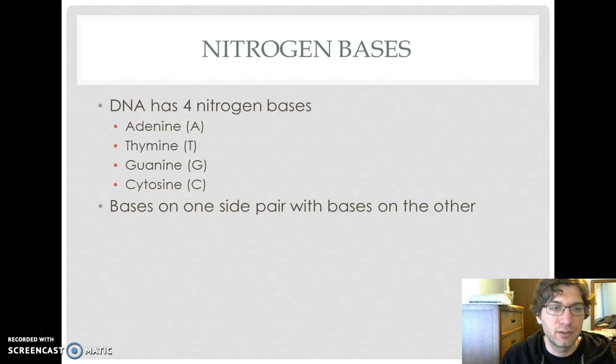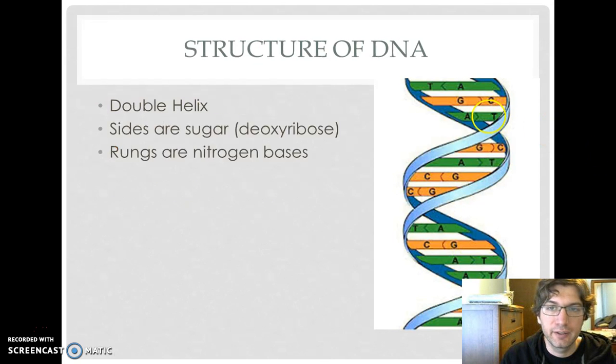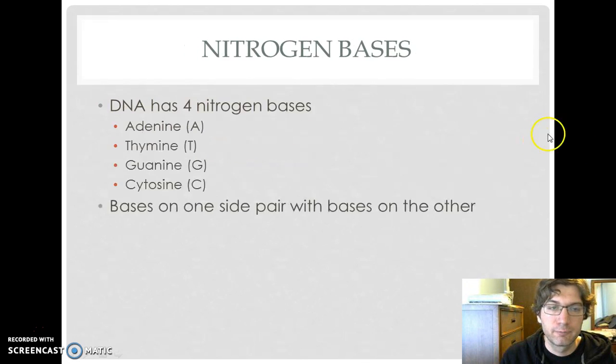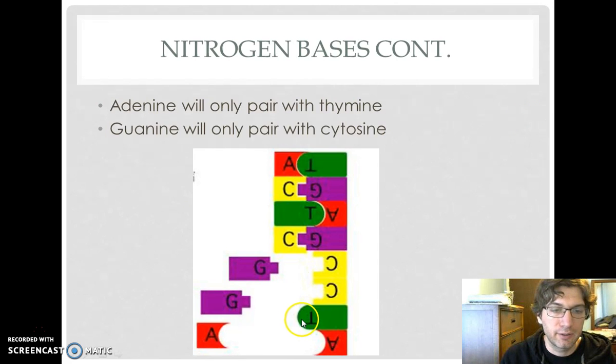You'll also take note that thymine and adenine always pair up. Guanine and cytosine always pair up. So bases are on one side, and they pair with the base on the other side of the rung. We have kind of a break in the middle here. As you can see, adenine and thymine kind of fit together. Guanine and cytosine fit together. They will always pair with their buddy.